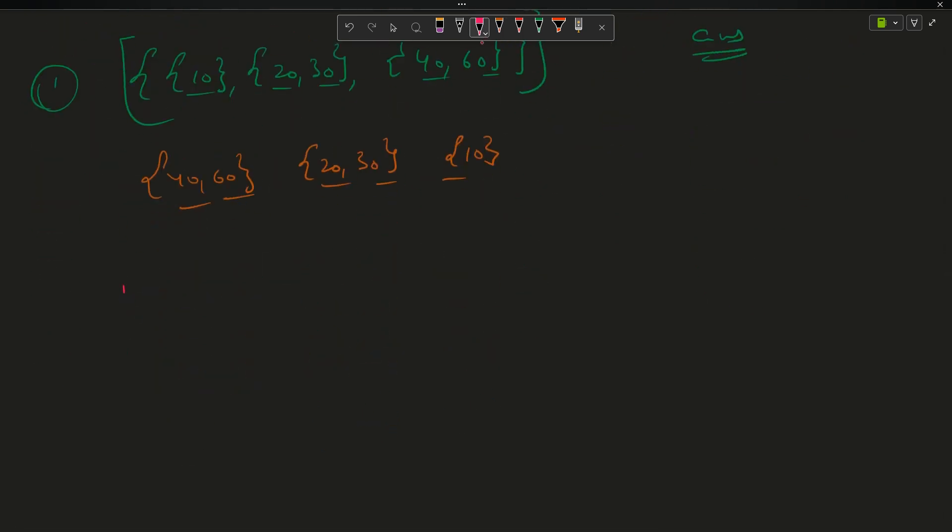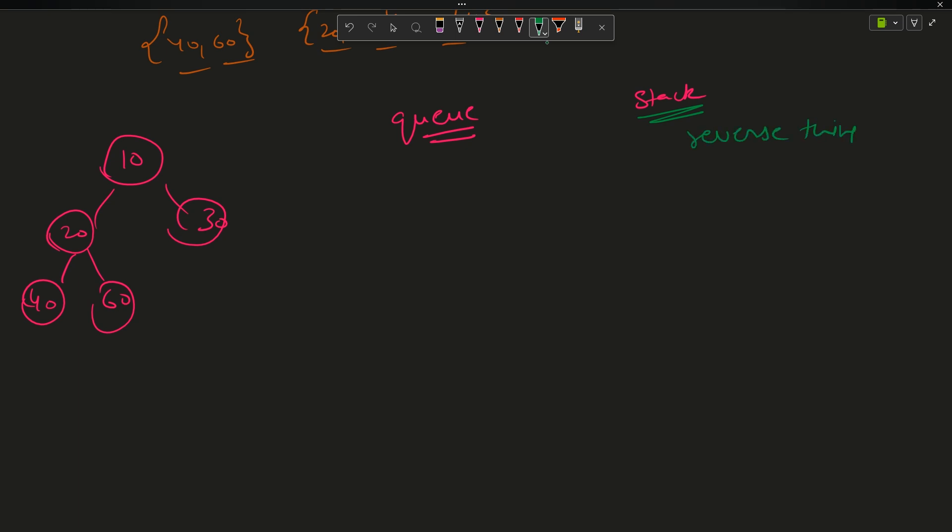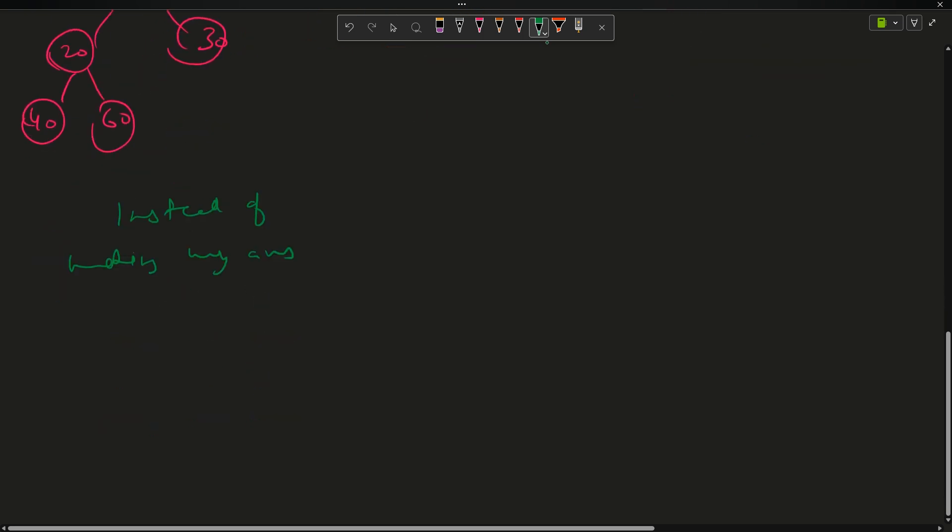What is the optimized approach here? So my tree is 10, 20, 30, 40, 60. This is my tree. Now we are going to use queue only as you were doing in the simple level order traversal. Now with queue I will be using a stack. How did I get the intuition of stack? Because I know stack is usually used to reverse things. So what I will do is instead of pushing instead of making my answer directly, I will push the nodes into stack first.